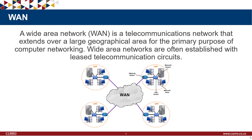Then we have WAN, or wide area network — that's where the internet comes in. A wide area network is a telecommunication network that extends over a large geographical area for the primary purpose of computer networking. Wide area networks are often established with leased telecommunication circuits, meaning the cables connect you to wherever you're going — somebody owns those cables and you just use them for a specific purpose.